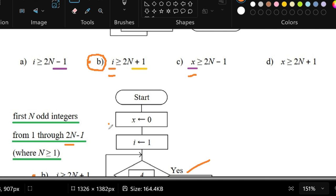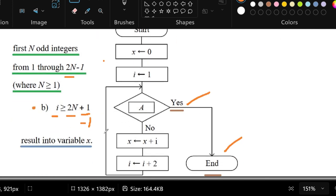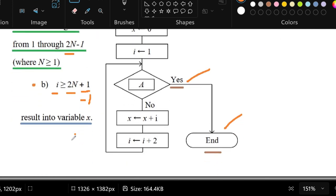What we can see is that we store the result into variable x. What result is that? That is the sum of the odd integers. And what we store in i would be the odd integer. So we are counting one by one all the odd integers and the sum of that we put into x.